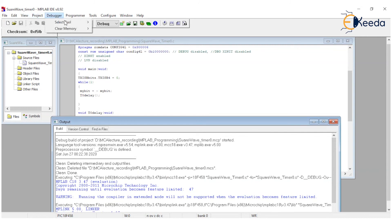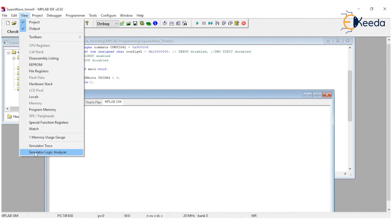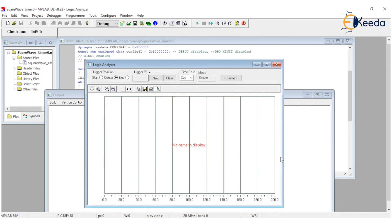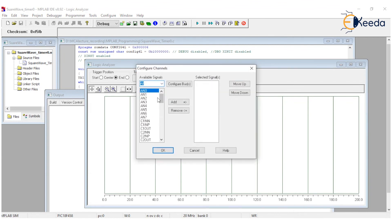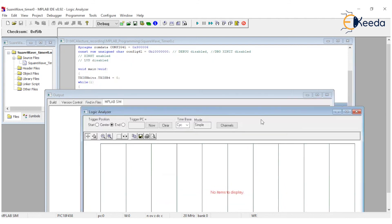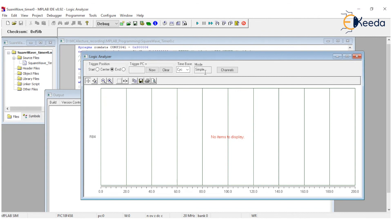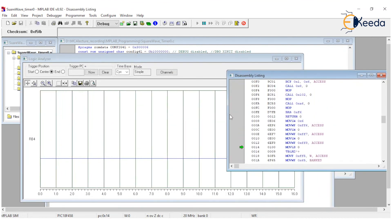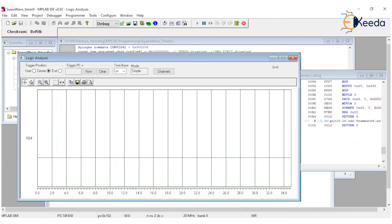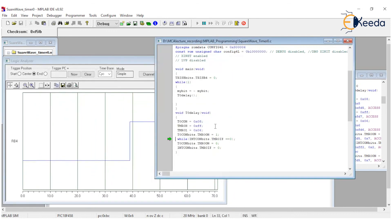Now build it. If it is build successful, okay, no error is there. Now go to Debugger, select MPLAB SIM. Now View, Simulator Logic Analyzer, where we can observe on which pin we are toggling - it is Port B, pin 4. So here RB4 only, I'll choose RB4, add, okay. Now start animation. See, it will show what is happening behind your program.